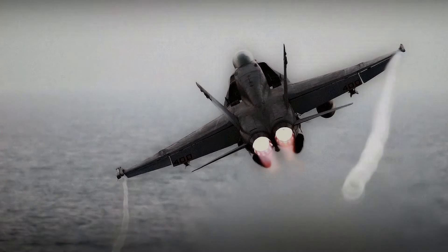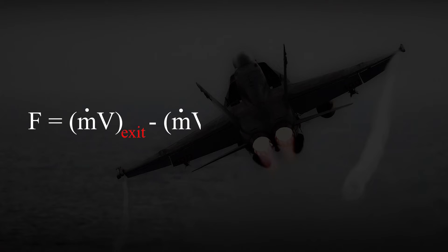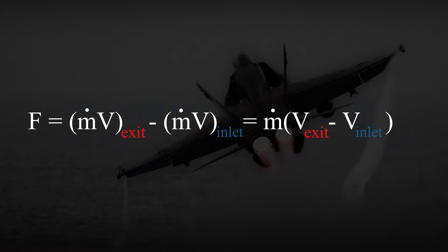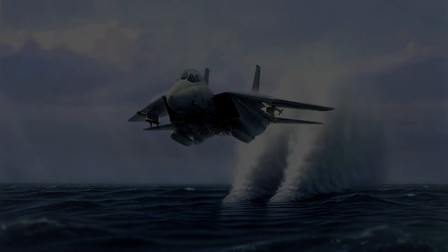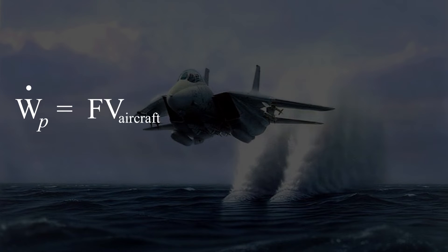We have already proven that the thrust developed in the turbojet engine equals to this expression, where V-exit is the exit velocity of the exhaust gases and V-inlet is the inlet velocity of the air, both relative to the aircraft. We can now define another quantity called the propulsive power, which is the thrust multiplied by the aircraft velocity.